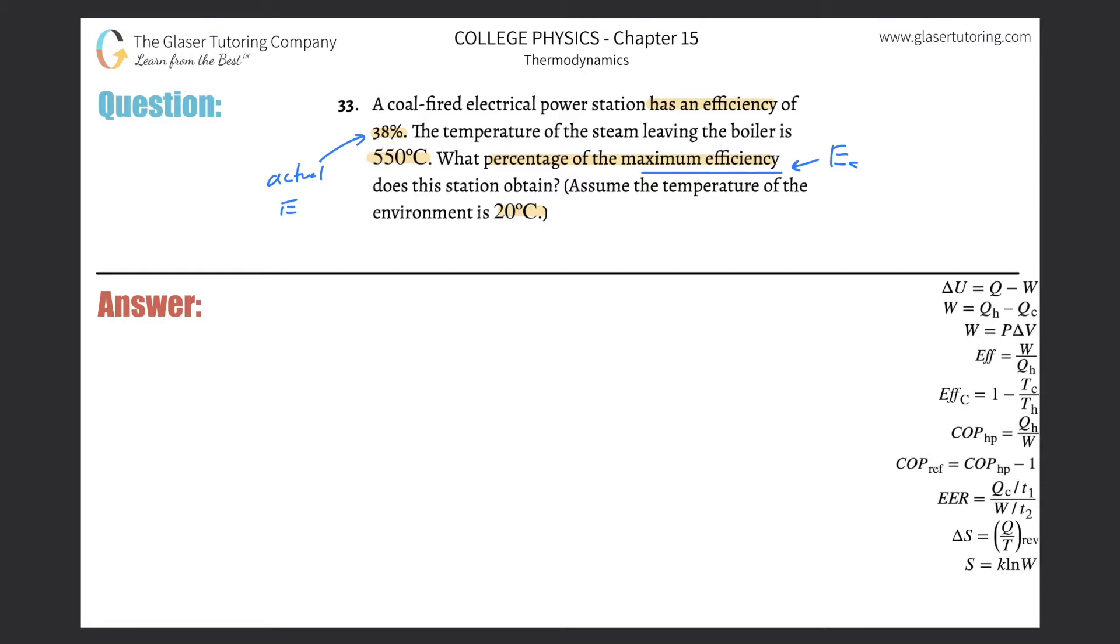Not the Carnot efficiency necessarily, unless the assumption behind the problem is that the efficiency is the maximum efficiency. But here they're telling us two different things, so I have to assume that this is the actual and that this one over here that we're calculating is the maximum, which is the Carnot.